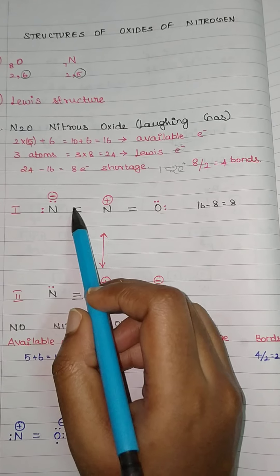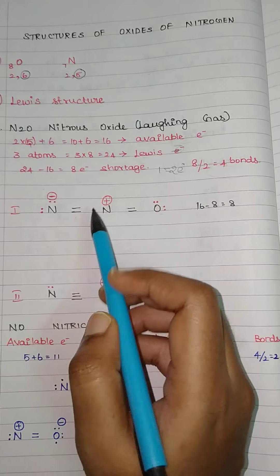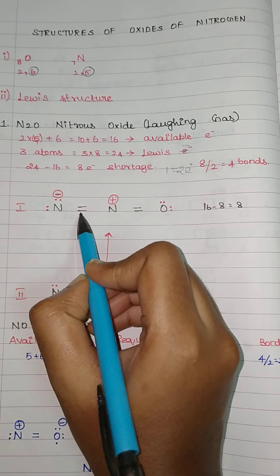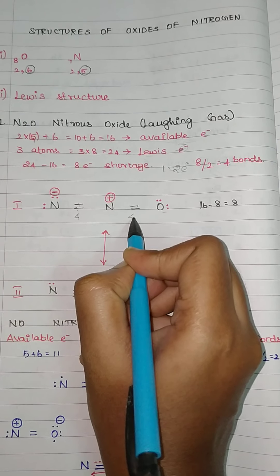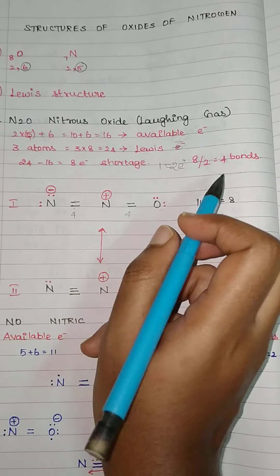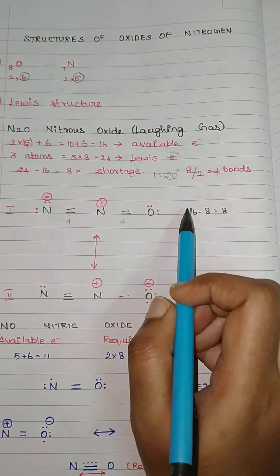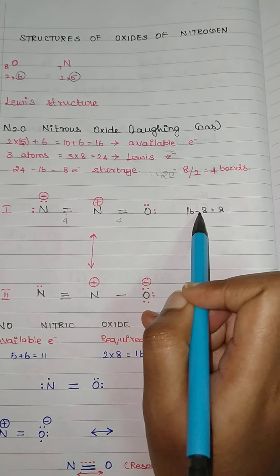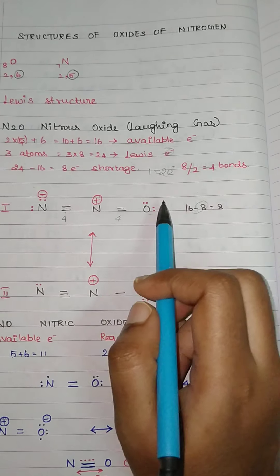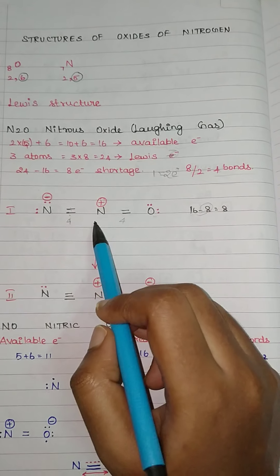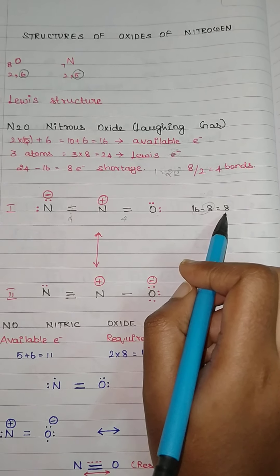So put 2 bonds on this side and 2 bonds on the other side. Now, 1 bond carries 2 electrons, so 2 bonds means 4 electrons on this side and another 4 electrons on the other side — that uses 8 electrons. We are having 16, so 16 minus 8 equals 8 electrons remaining, because 8 you have already used in the form of 4 bonds.